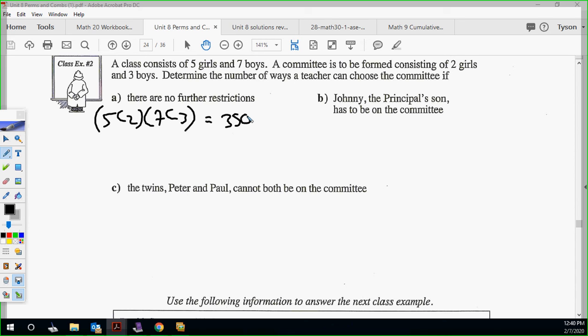Johnny is the principal's son. He has to be on the committee. That means your committee of 5 is a locked-in boy. We have a boy locked in. Now we need to change our boy multiplier from 7 to 6. We only want 2 boys now. The girls stay the same. 5 choose 2. That gives me 150.